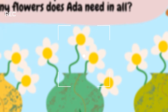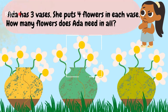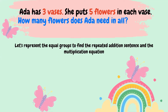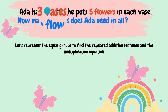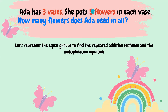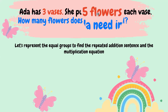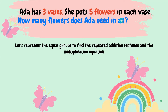Now I see that we're ready to solve this problem. Ada has three bases. She puts four flowers in each of the bases. How many flowers does Ada have? Let's represent the equal groups to find the repeated addition sentence and then the multiplication equation. But first of all, we need to highlight or underline the information of the problem. In this case, my information is three bases. I know that Ada puts five flowers in each of the bases. I'm going to represent the bases with circles and put my five flowers in them.